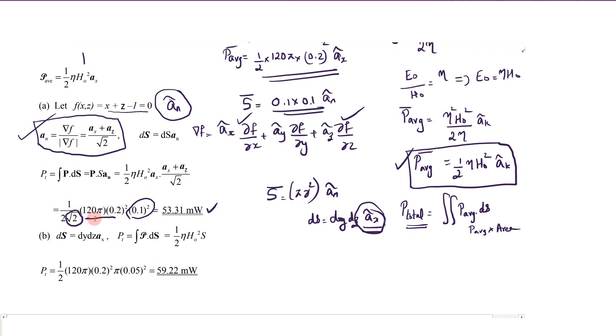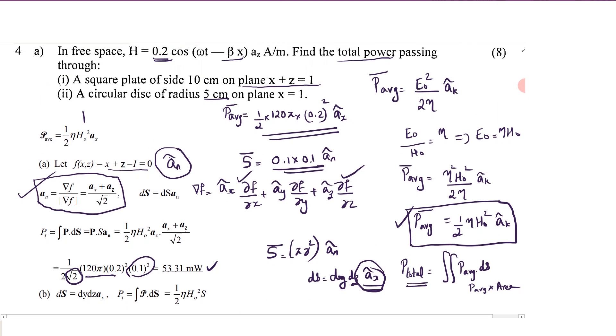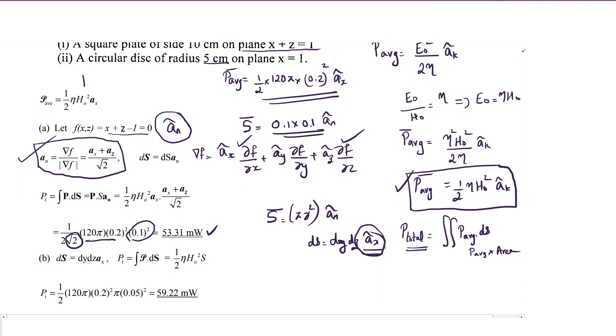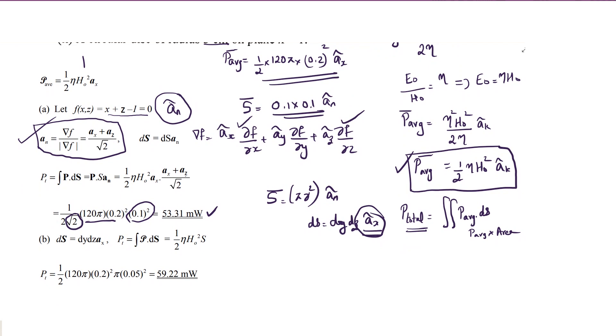Y z plane means ds will be dy dz in the unit vector x, so you will directly get the unit vector ax. So it's only having the x component. Power average power, that equation is also having only x component, so it will be half eta h naught square into pi r square, where r is equal to the value given as 5 centimeter which is 0.05 meter. You can directly substitute and you will get the value as 59.22 milliwatt.